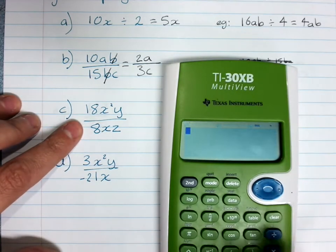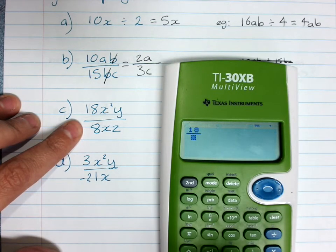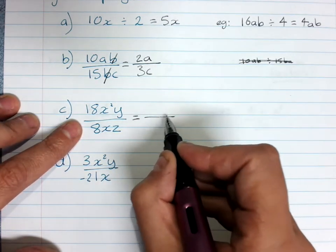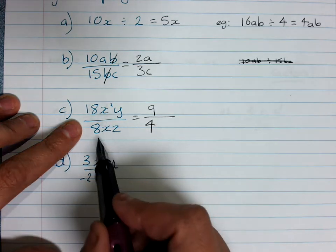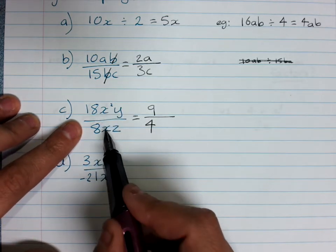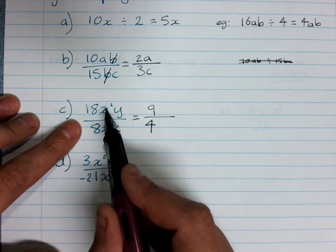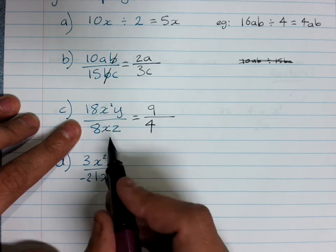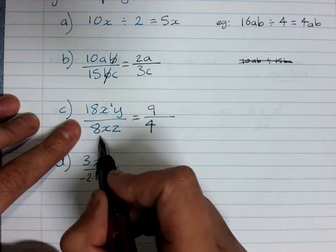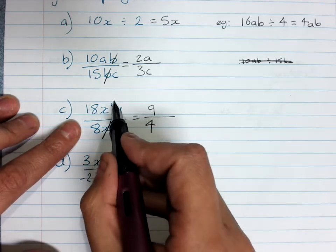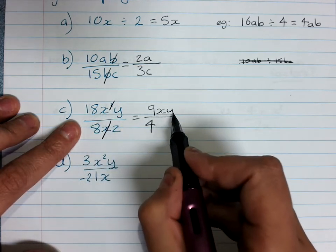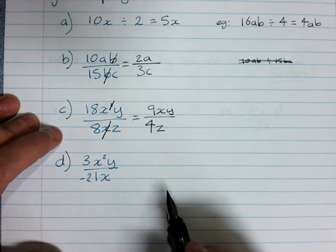We'll simplify 18 over 8. We've got 9 over 4. So we know we're going to have a 9 on the top and a 4 on the bottom. Now, x squared over x—it's very tempting to cross out the x's, but x squared means x times x, so there's actually 2 x's up here. You're only cancelling out 1 because there's only 1 down here. So cancel that x and cancel the squared because now we're down to 1x up the top. So we'll have x, y on top and z on the bottom.